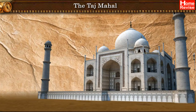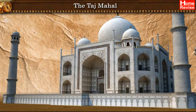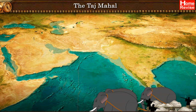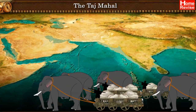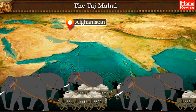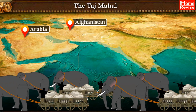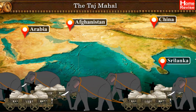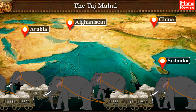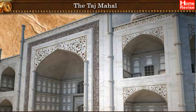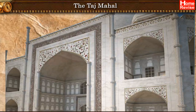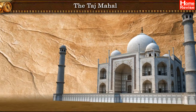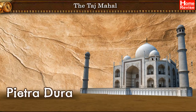The entire structure of Taj Mahal is made of pure marble, brought from many different states and countries including Afghanistan, Arabia, China, and Sri Lanka. The walls are decorated with floral designs made of 30 semi-precious stones, a method of decoration called Pietra Dura.